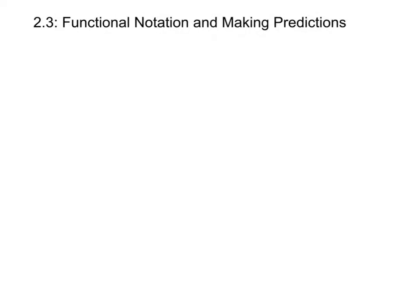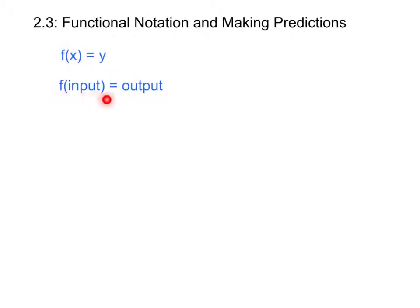In this section, we're going to discuss a special functional notation and see how it can be applied to different models. The notation is that f of x equals y. Notice that we read this as f of x — this does not mean f times x. Another way of writing this is that f of the input equals the output. The number inside the parentheses is always the input, or the x, or the independent variable.